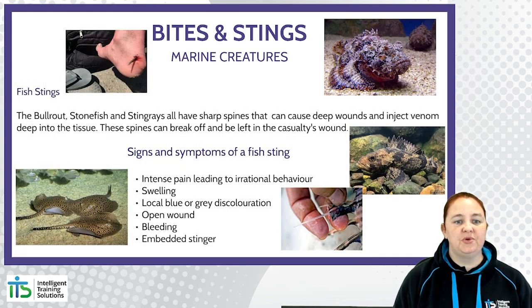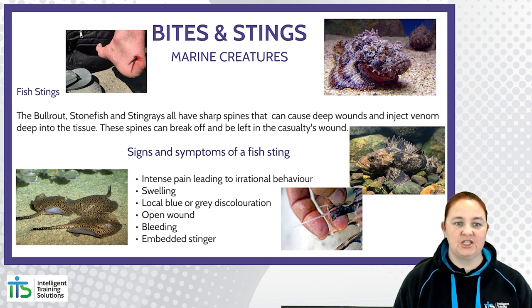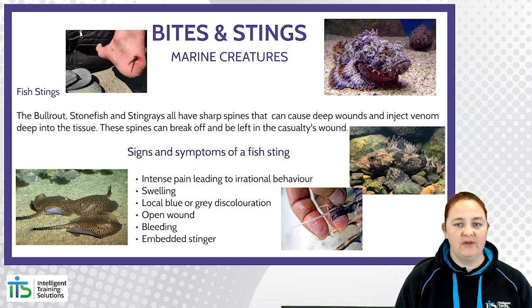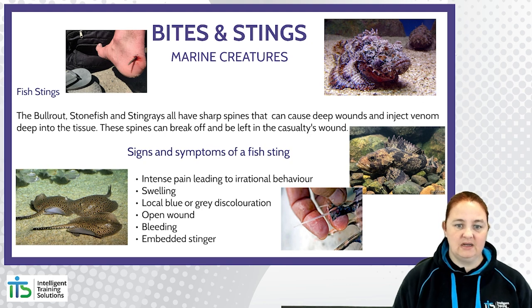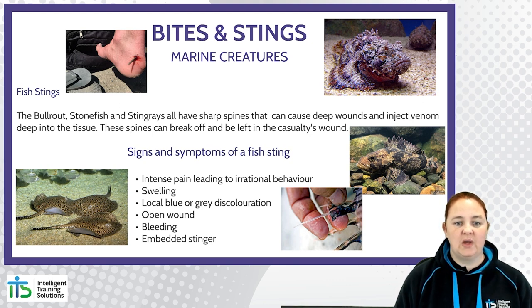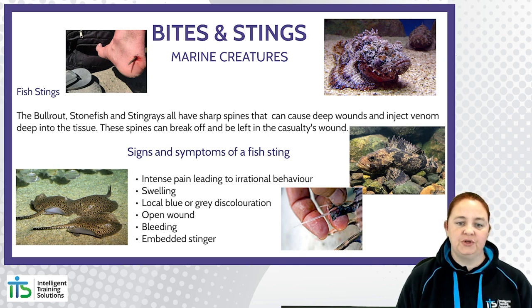Fish stings — bullrout, stonefish and stingrays all have sharp spines that can cause deep wounds and inject venom deep into tissue. Their spines can break off and be left in the casualty's wound. Signs and symptoms can include intense pain leading to irrational behaviour, swelling, local blue or grey discolouration, open wound, bleeding and an embedded stinger.